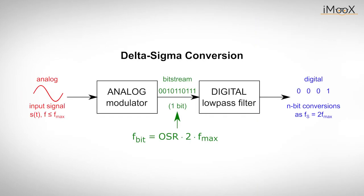Here we can see that an input signal limited to a maximum frequency fmax is converted by a modulator into a bit stream, as we have already discussed. The modulator is clocked with a multiple of the minimum Nyquist frequency, 2 times fmax. It generates an output bit stream of the rate fbit is OSR times 2 times fmax, where OSR is the so-called oversampling ratio.